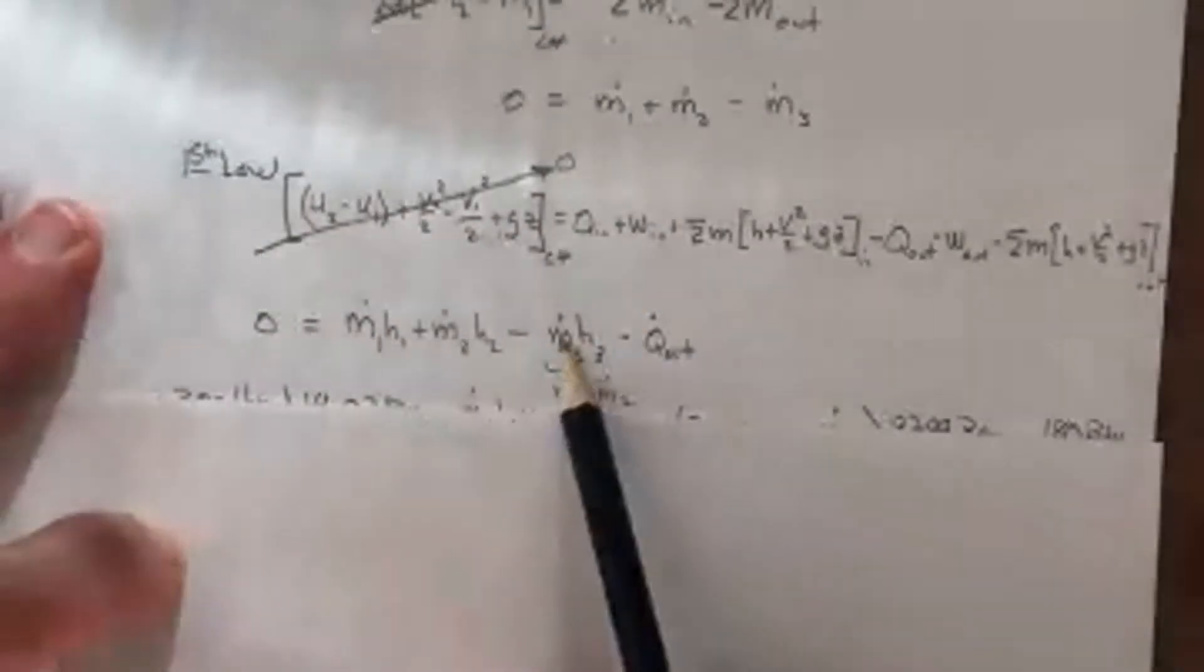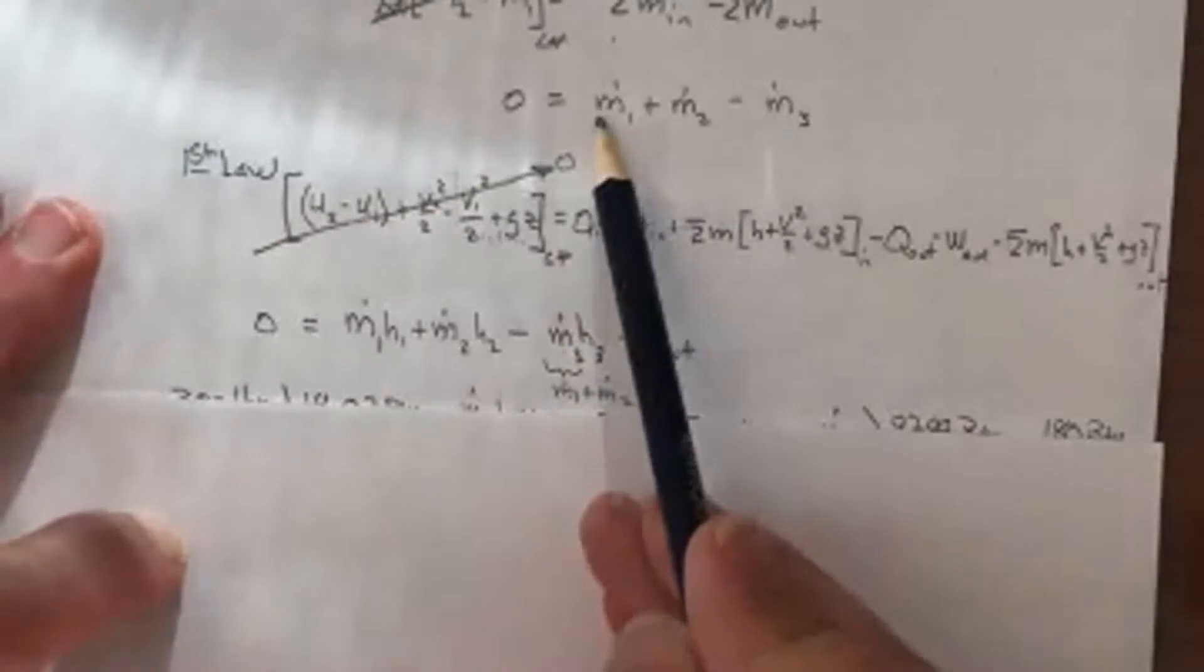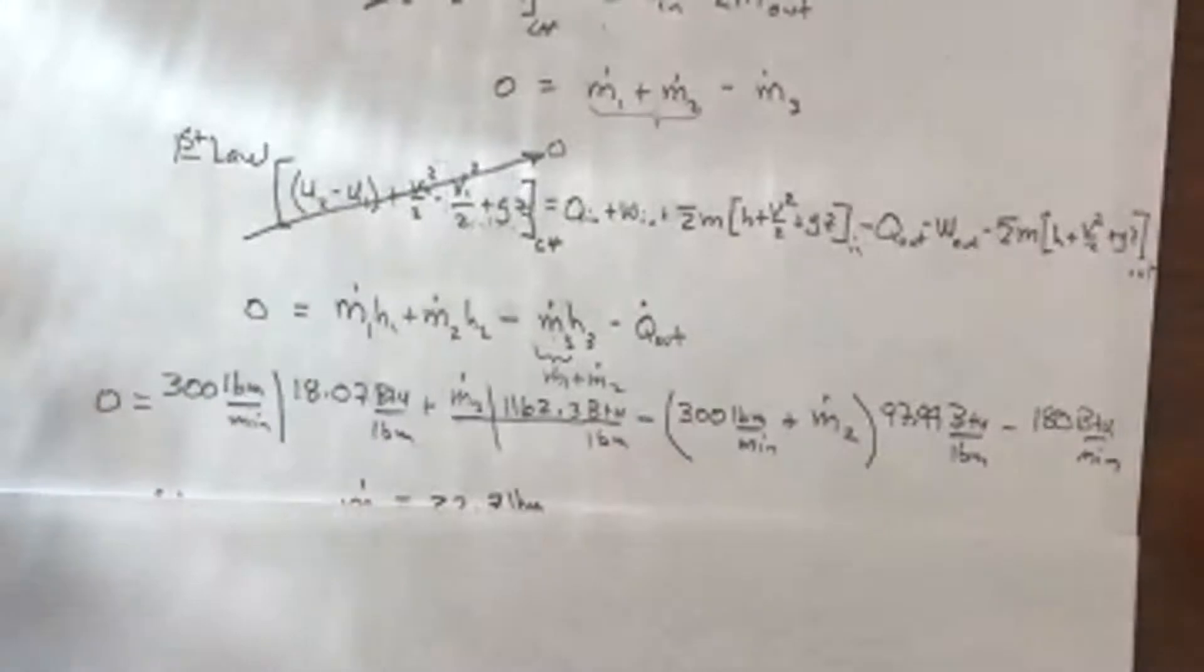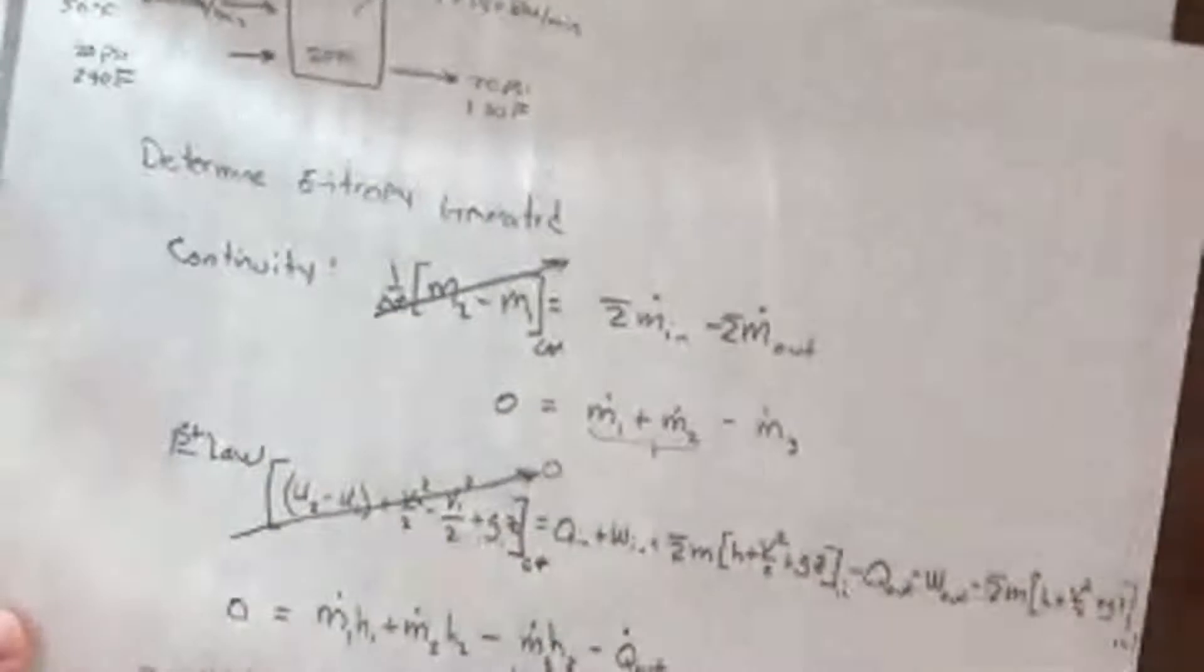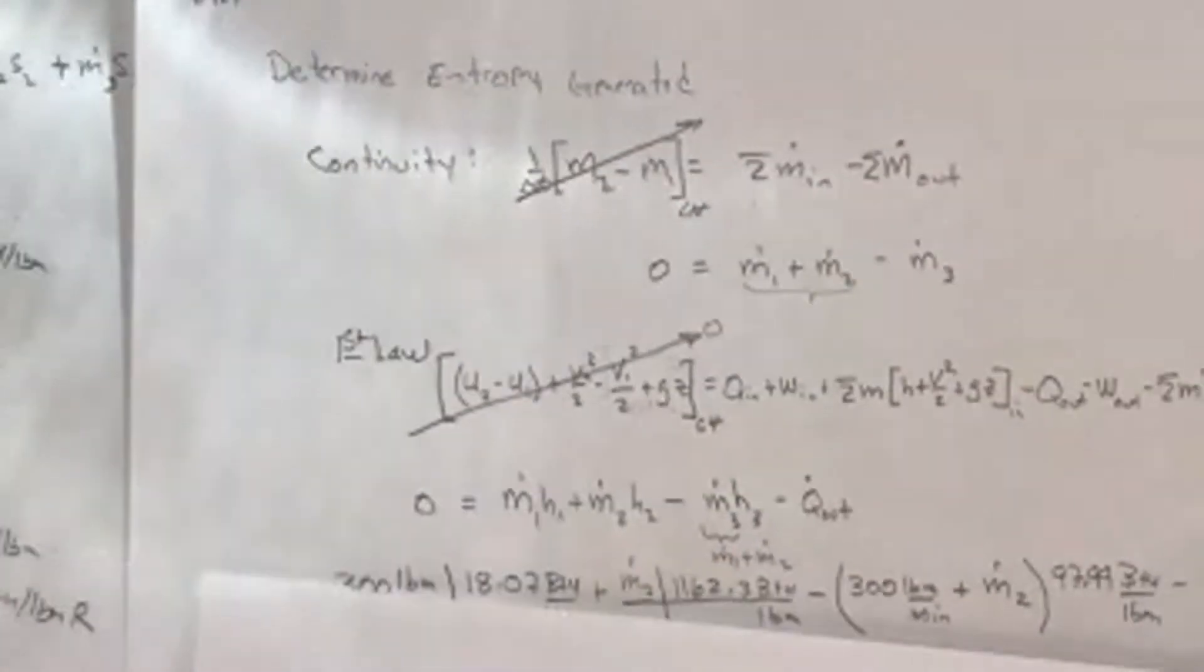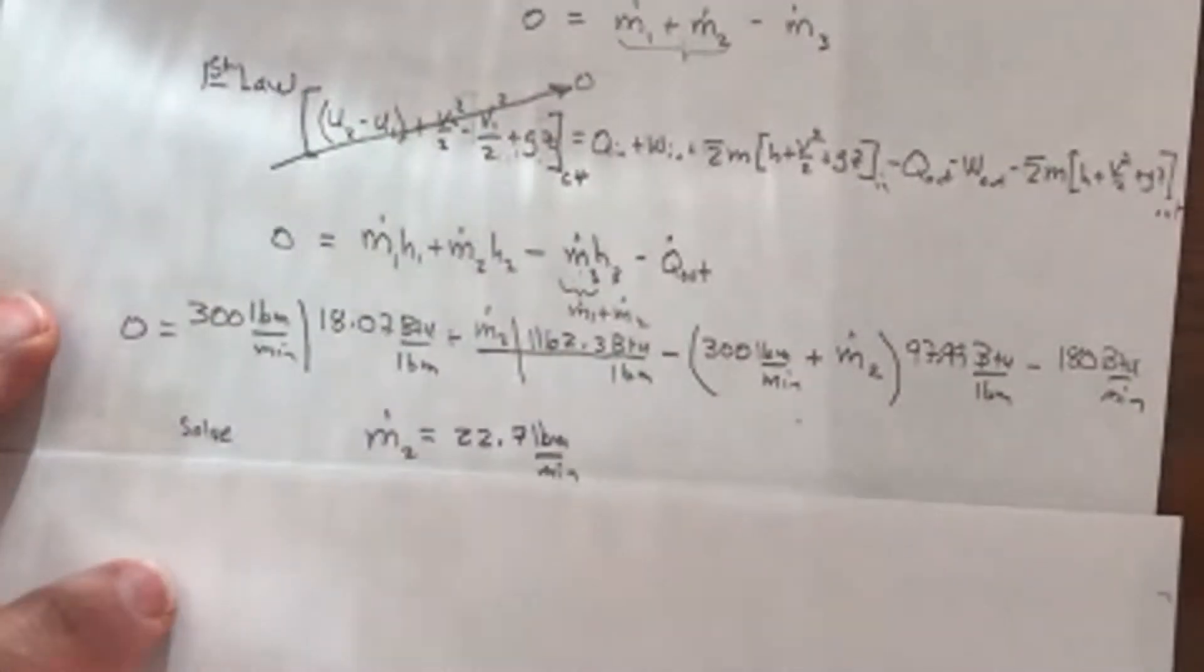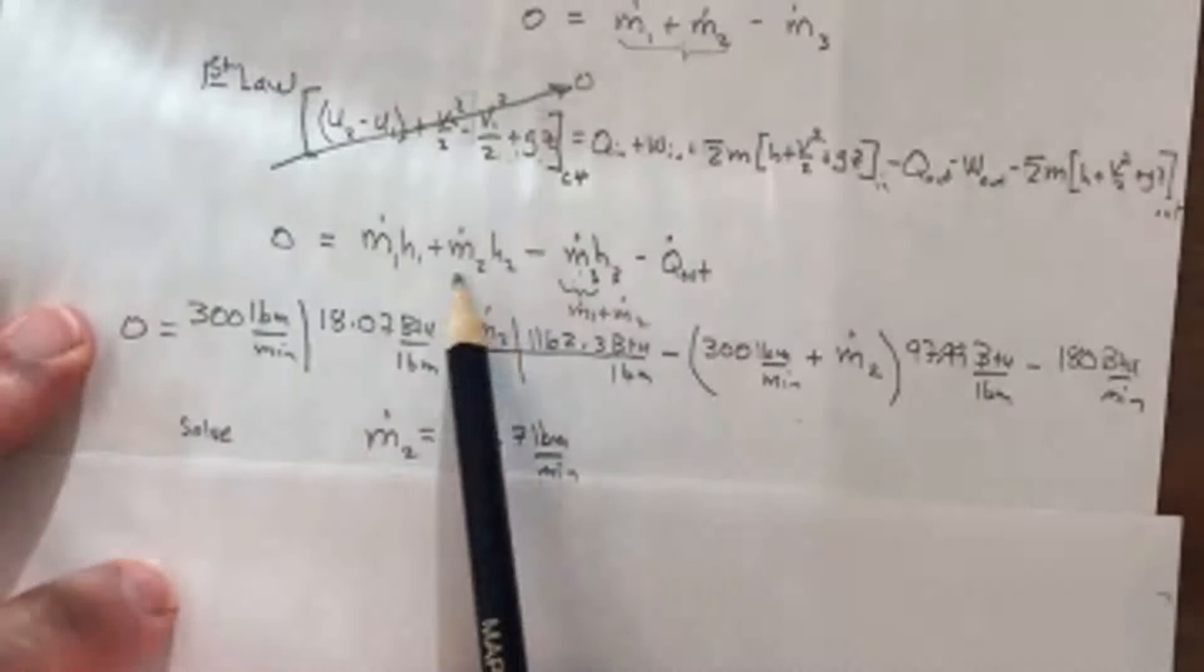So I can simplify this down to just this form for the first law: M dot H one plus M dot H two minus M dot H three minus Q out. And I recognize from the first law here that I could get rid of M dot three by substituting in M dot two M dot one. So I can with the properties that I've already obtained from my states, I could calculate then my unknown, which would be solving then for M dot two.